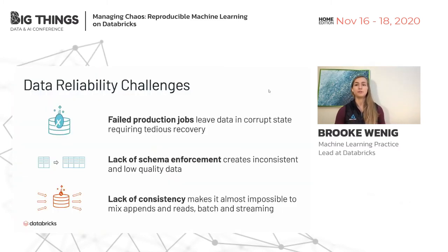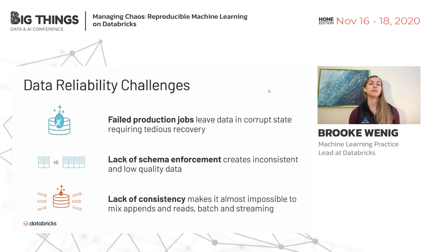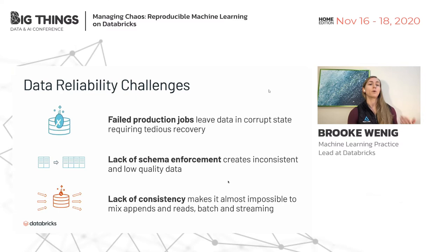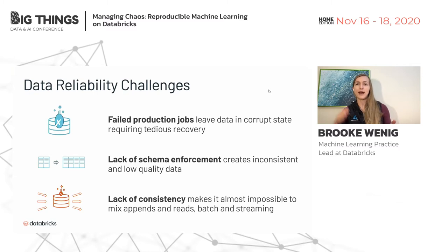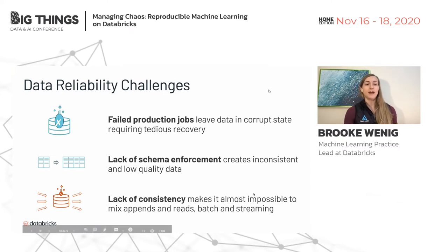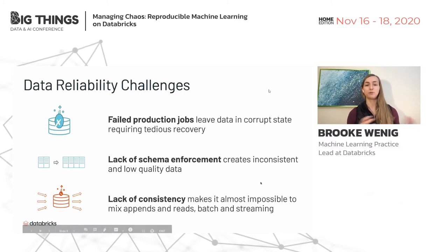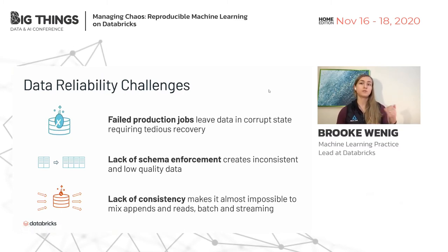There are data reliability challenges to overcome. What happens if you have a failed production job and a write fails partway through — what do you do with those partially committed files? What if your data evolves over time and somebody adds new columns? How do you retroactively handle that? And then there's the issue of consistency — how can you mix appends with reads, or batch and streaming solutions? These are all the data reliability challenges that Delta Lake solves.